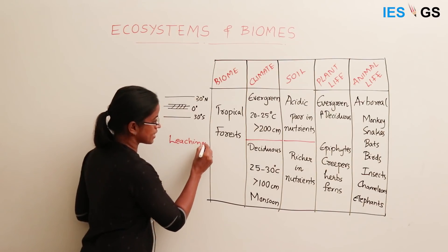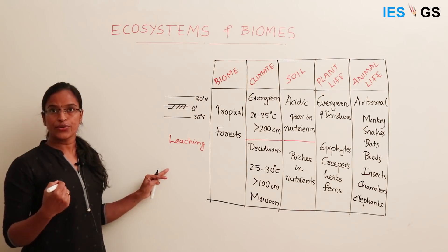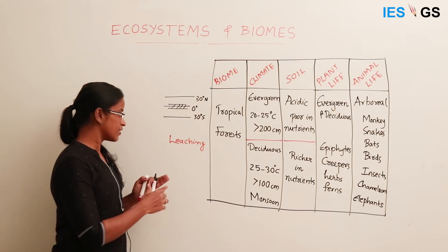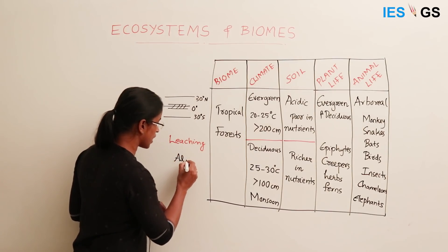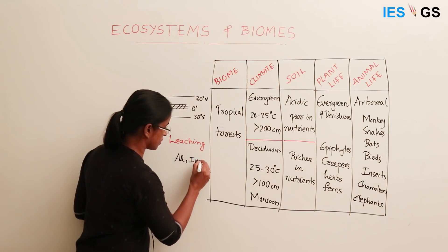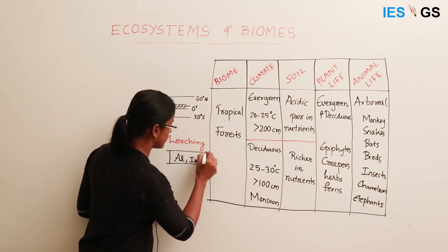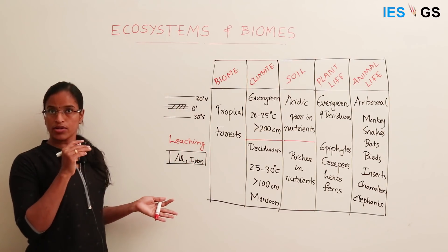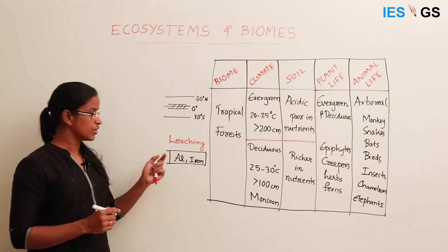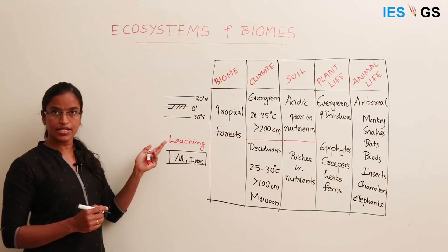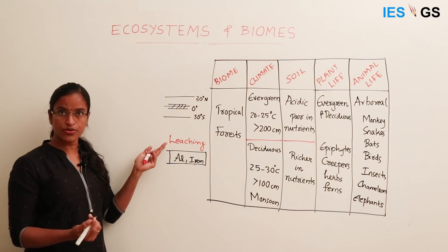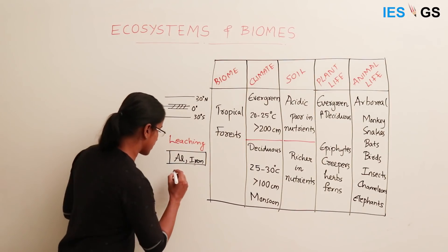Leaching is a type of soil process where soil nutrients are transported to the deeper sub-layers of the soil. What remains in the soil will be only aluminium and iron compounds — iron oxides — which form a hard layer on the top soil. All other oxides are transported down through this process called leaching, because precipitation is very high and soil erosion is also very high.